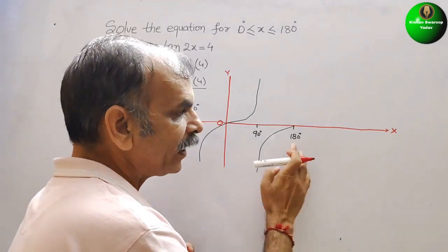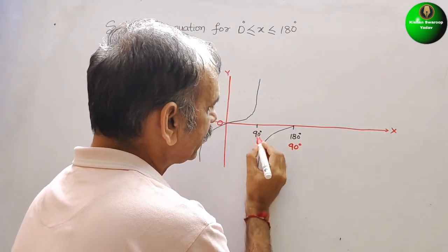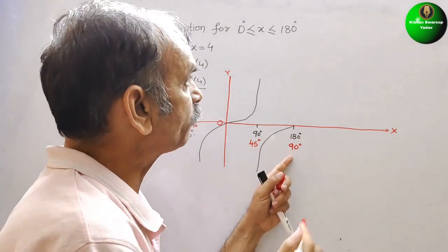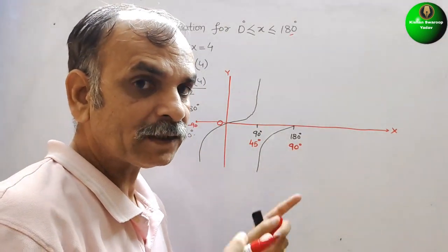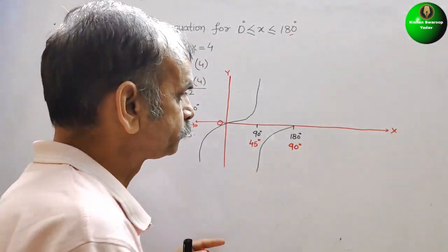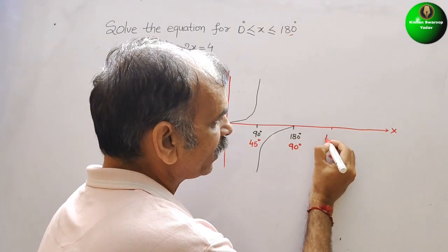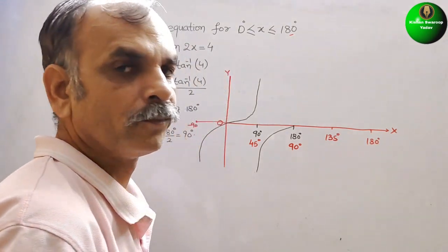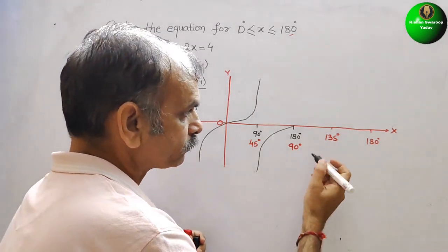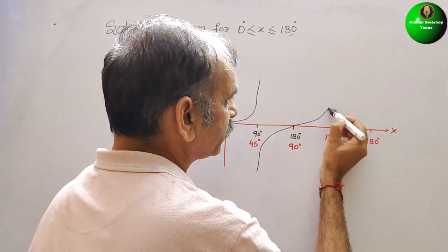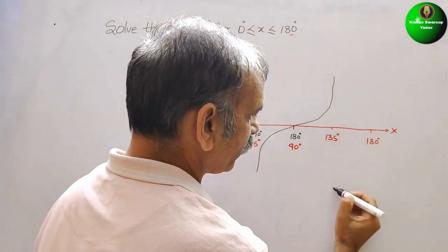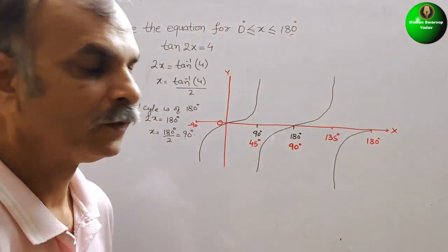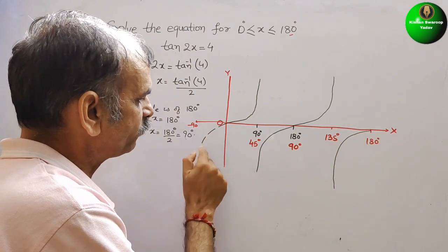We divide by 2, so instead of 180° it will be 90°, and here we get 45°. So this is 45°, this is 90°. They have told us to find out up to 180°, so we make one more cycle. After 45° it will be 135°, and here comes 180°. We increase our cycle up to here, and from 135° it goes like this. We don't want the negative part, so we remove it.